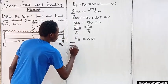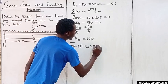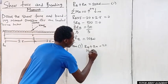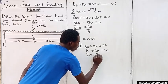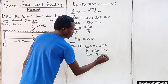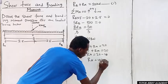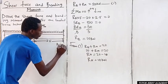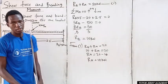From equation one, Rb plus Ra equals 20. Substituting Rb = 10, we get 10 plus Ra equals 20. Taking 10 to the other side, Ra equals 20 minus 10, which is 10 kilonewtons. So Rb = 10 kilonewtons and Ra = 10 kilonewtons.